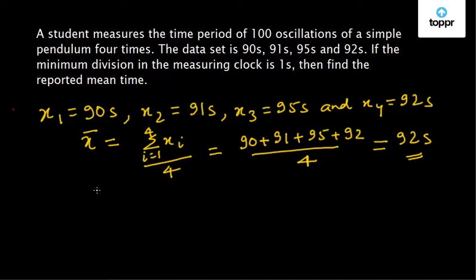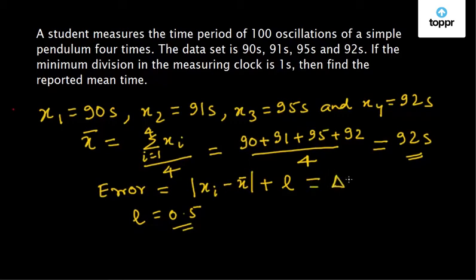So the error in each sample data can be written as error equal to variation from the mean of each data that is xi minus x-bar plus the least count error. The least count error is 0.5 because the minimum division in the measuring clock is 1 second. So we can write this as delta xi.